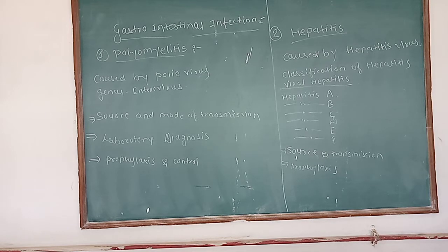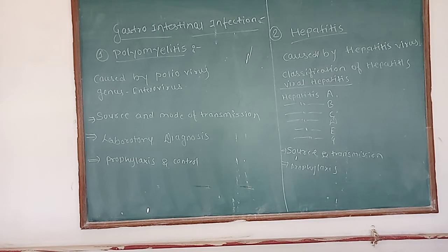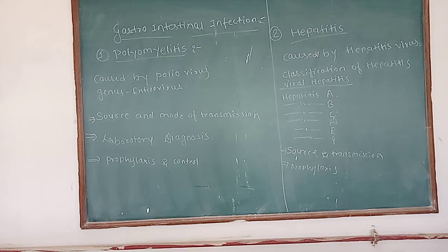Viral hepatitis is referred to as a primary infection of the liver by hepatitis virus type A and hepatitis virus type B, or by other hepatitis viruses. Hepatitis may also occur incidentally during the course of infection with many other viruses such as yellow fever, Lassa fever, herpes simplex, rubella, or coxsackie viruses.